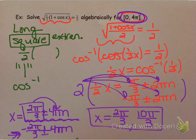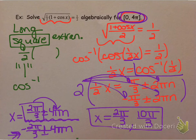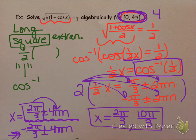One observation worth noting: the coefficient in front of x inside your trig function tells you how many times as many answers to expect compared to normal. For inverse cosine of 1/2 over the domain 0 to 4π, we would normally expect 4 answers. And this 1/2 coefficient chopped that number in half, so we only had 2 answers — exactly as we can predict.